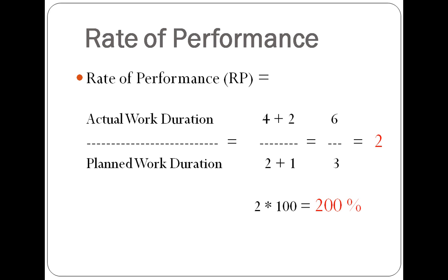The rate of performance is calculated by dividing the actual work duration by the planned work duration. Only activities on the critical path will be considered. Of the completed activities, only A and B were on the critical path. Activities A and B actually took 4 and 2 weeks respectively for a total of 6 weeks, but they were planned to take 2 and 1 week respectively, or 3 weeks. Therefore, 6 divided by 3 indicates a rate of performance of 2, or expressed as a percentage, 200%.